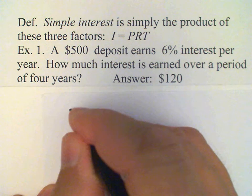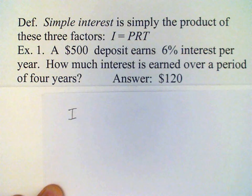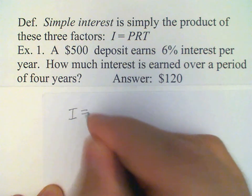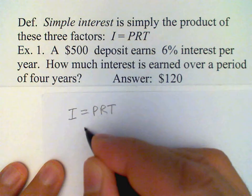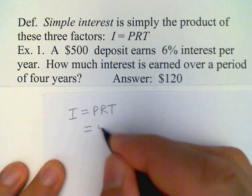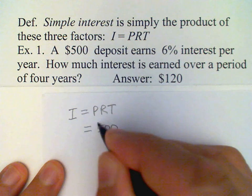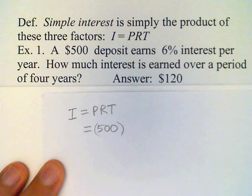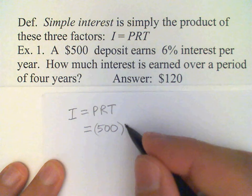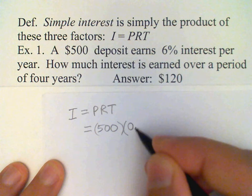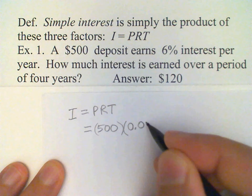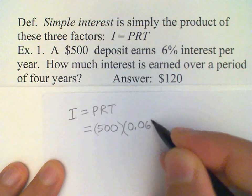We know that the interest is the product of the principal, the rate, and the time. So what's the principal here? It's $500. The rate is 6%. Of course, when we multiply percents, we must convert to a decimal. So 6% converted to a decimal is 0.06.